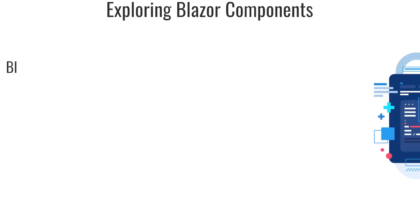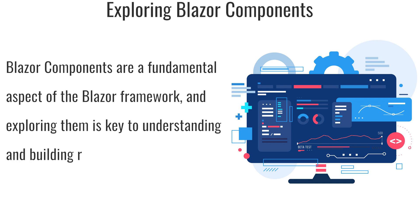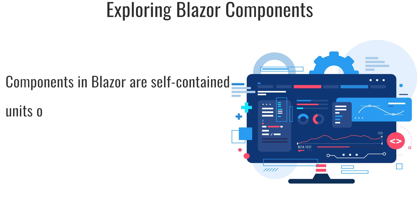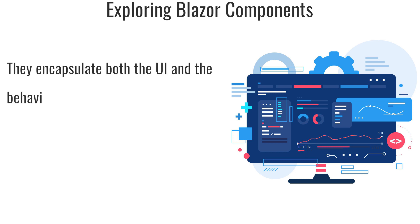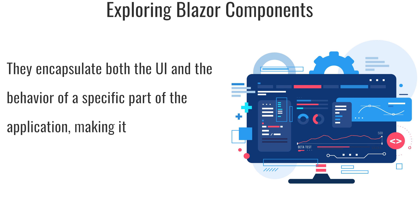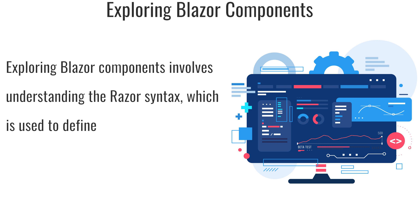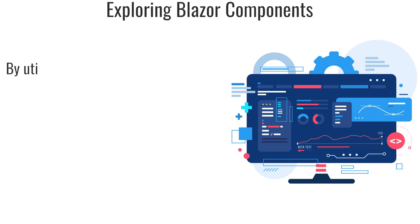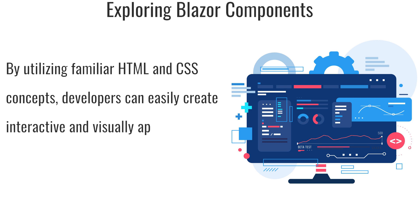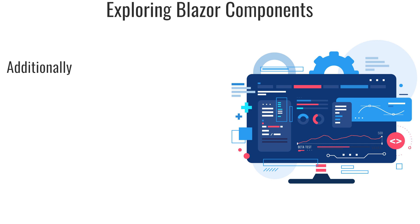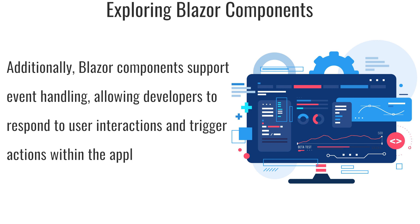Exploring Blazor Components: Blazor components are a fundamental aspect of the Blazor framework, and exploring them is key to understanding and building rich web applications. Components in Blazor are self-contained units of functionality that can be reused throughout an application. They encapsulate both the UI and the behavior of a specific part of the application, making it easier to manage and maintain code. Exploring Blazor components involves understanding the Razor syntax, which is used to define the structure and layout of the component. Blazor components also support event handling, allowing developers to respond to user interactions and trigger actions within the application.